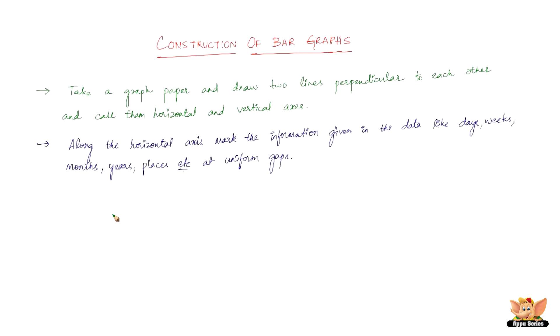The second step: along the horizontal axis mark the information given in the data, like days, weeks, months, years, places, etc., at uniform gaps.